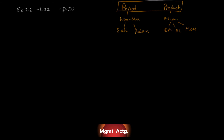Number one: depreciation on the sales people's car — manufacturing cost? No. That means it's a period cost. Number two: rent on equipment used in the factory — it says 'factory,' so yes, manufacturing cost — product cost. Number three: lubricants used for machine maintenance — that sounds like a manufacturing cost to me, indirect but still manufacturing — product cost.